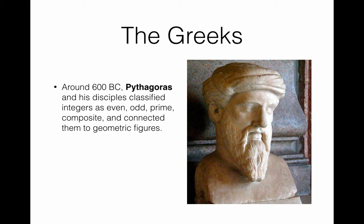Around 600 BC, Pythagoras and his disciples were the first ones to classify the integers into certain categories, such as the even numbers, odd numbers, prime numbers, composite numbers. They talked about perfect numbers and things like this. They also connected integers to geometric figures. Geometry was quite in fashion with the ancient Greeks, and they did a lot of things with geometric shapes.